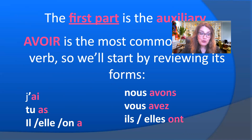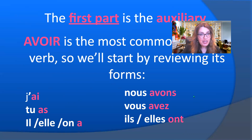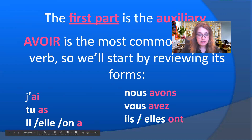Meaning: I have, you have, he/she/it has, we all have, you all have, they — feminine and masculine — have. J'ai, tu as, il a, elle a, nous avons, vous avez, ils ont. The verb avoir is called avoir in the infinitive; once conjugated, it looks like this.